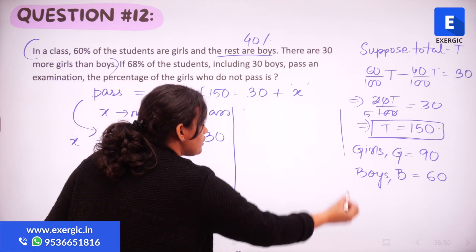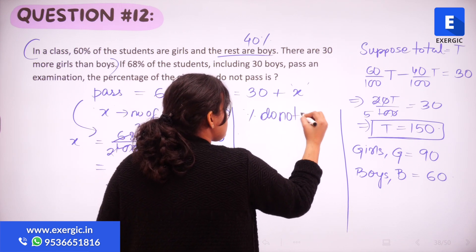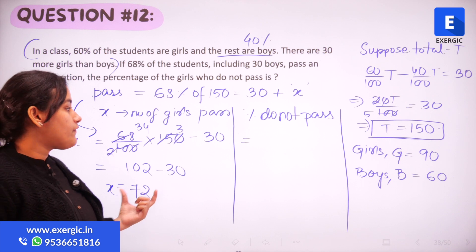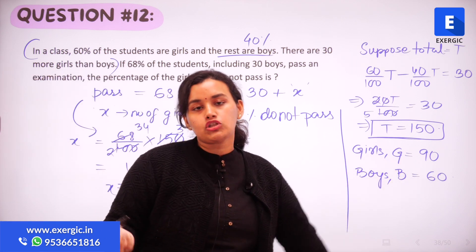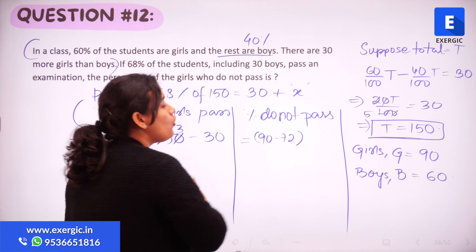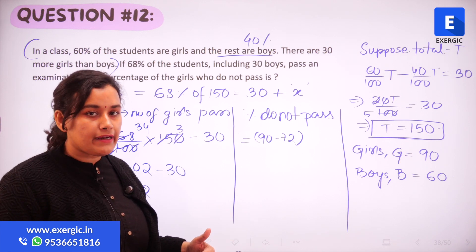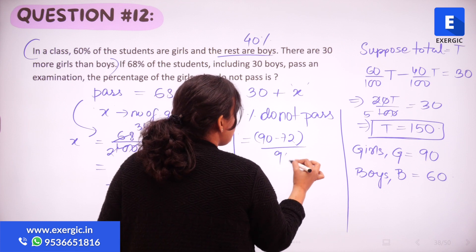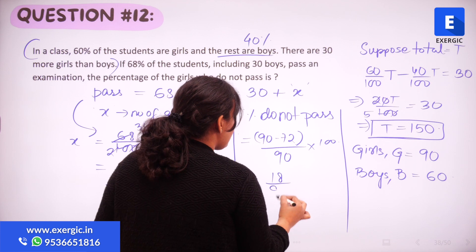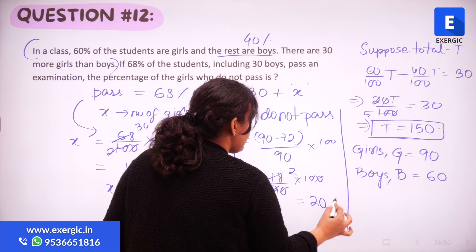They ask for the percentage of girls who do not pass. If 72 girls passed and the total number of girls is 90, then 90 minus 72 = 18 girls did not pass. The percentage is calculated with respect to the total number of girls: (18/90) × 100 = 20%.